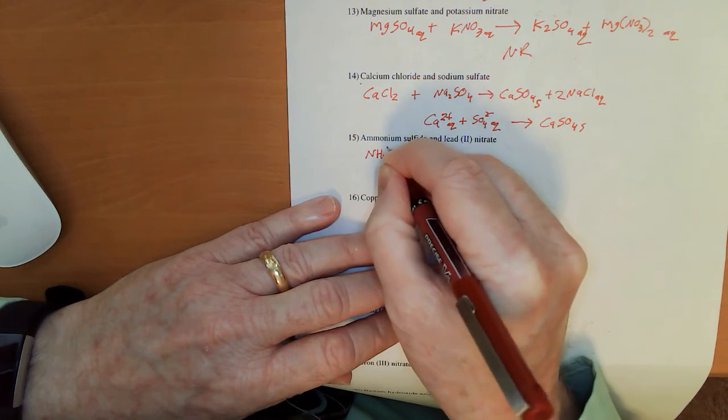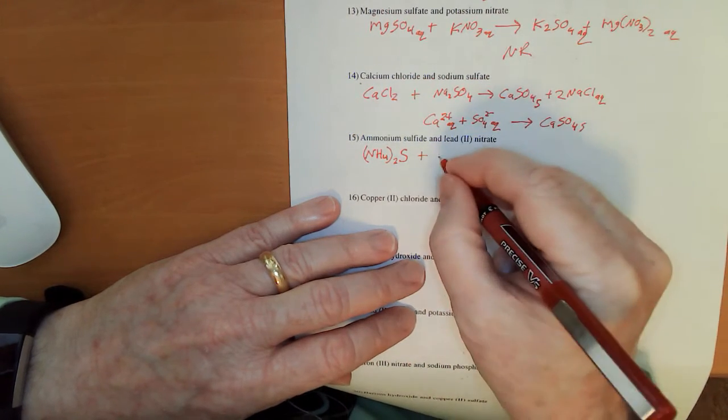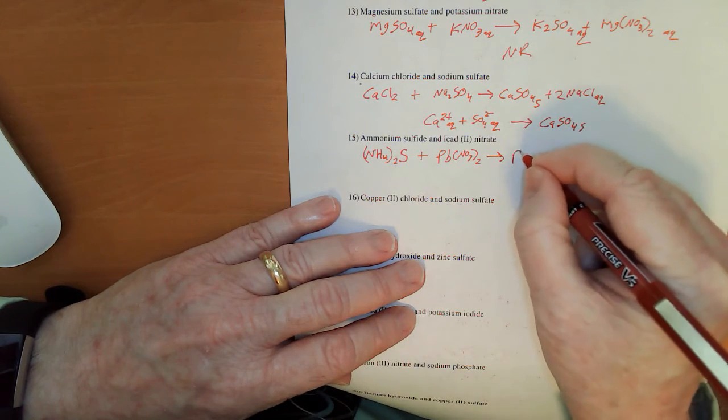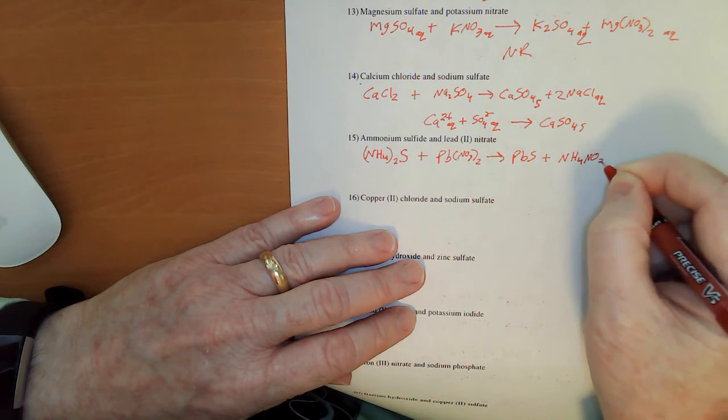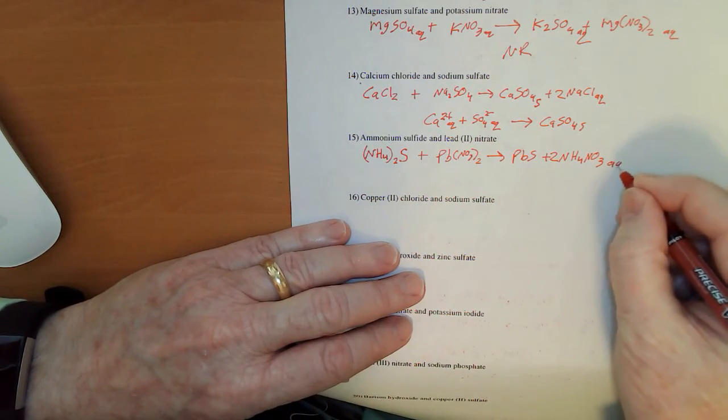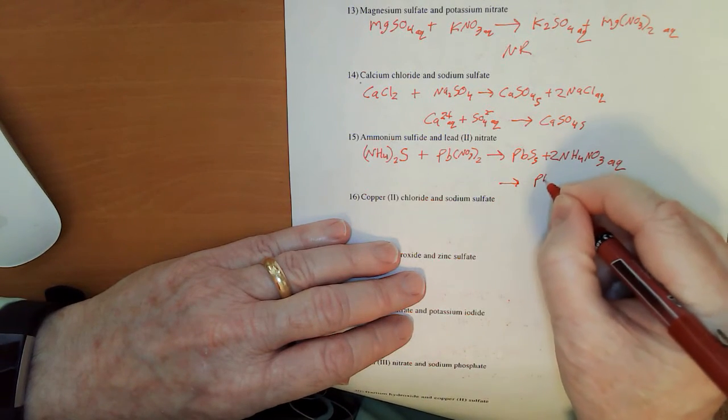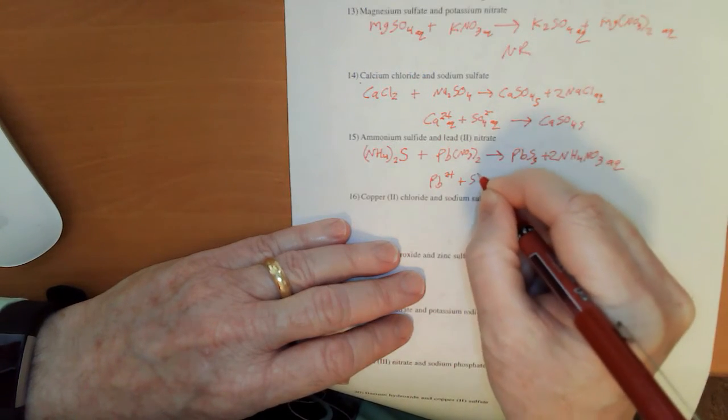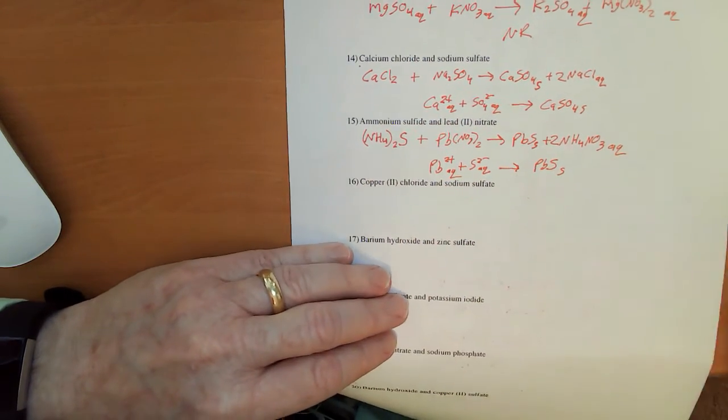Ammonium sulfide is NH4 sub 2 S. And lead 2 nitrate is Pb NO3 sub 2. To give me PbS and NH4NO3. I'm going to need to put a 2 there to balance this out. Well, nitrates we know. Soluble, but the PbS is not. So, PbS is the solid. And Pb 2 plus and S 2 minus aqueous for both. Give us that precipitate.